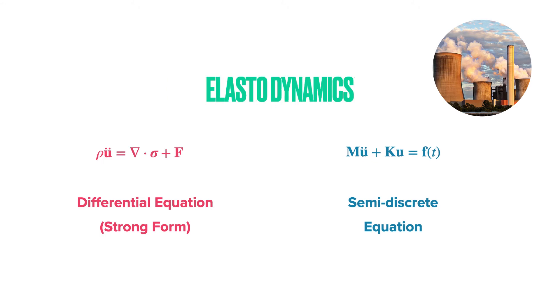And finally, here is the semi-discrete equation of elastodynamics. U̇ is the acceleration and U is the displacement. On the left hand side we see the strong form and on the right hand side we see the semi-discrete equation. M is the mass matrix, K is the stiffness matrix.